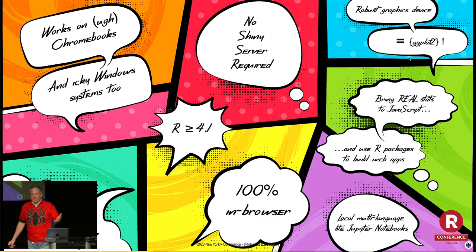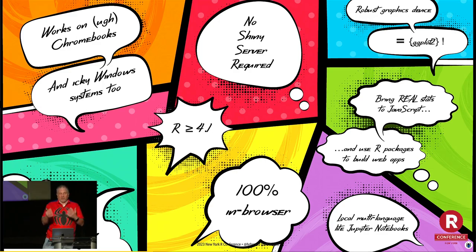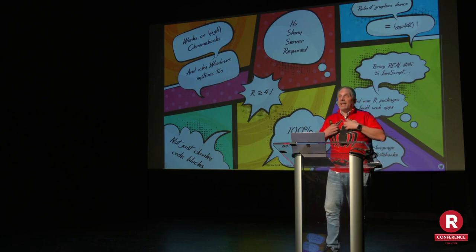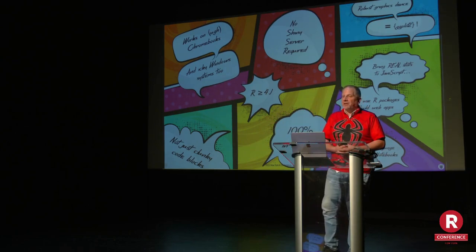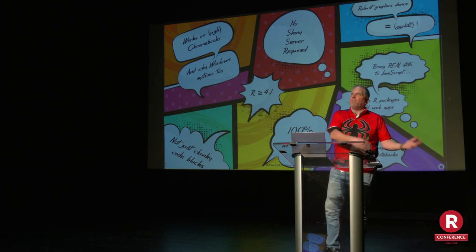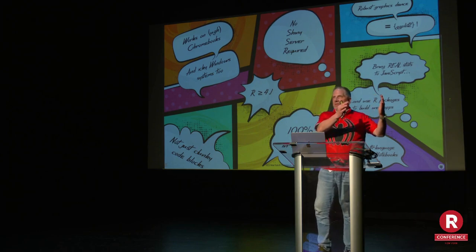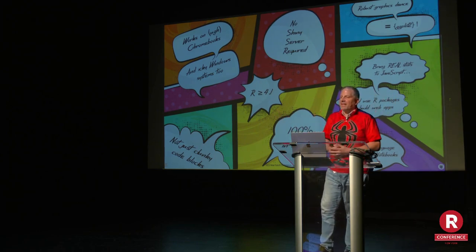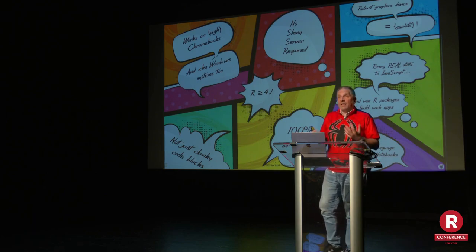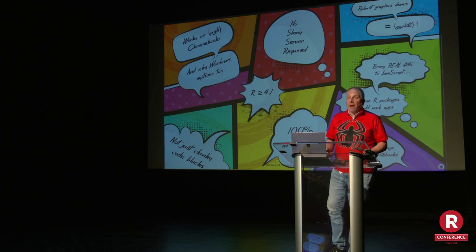So why is that amazing? It works on Chromebooks, runs on Windows systems. It doesn't require a Shiny server — and if you know me, you know that's a really good thing. It provides a robust graphics device — there's a great graphics device built by the creators — which means I get to put ggplot2 in the browser without executing code somewhere else. It's modern R based on R 4.1, moving forward. It's all in-browser, and I can even do stats in R and give JavaScript the results. This makes a whole new generation of web apps possible.